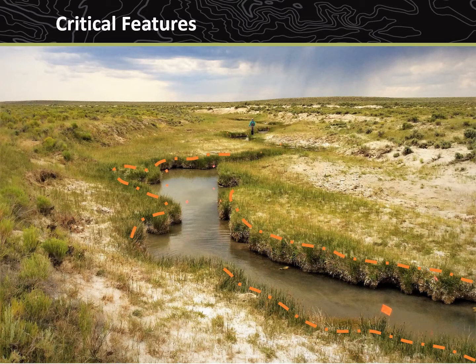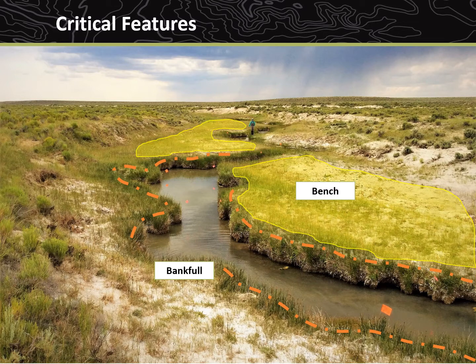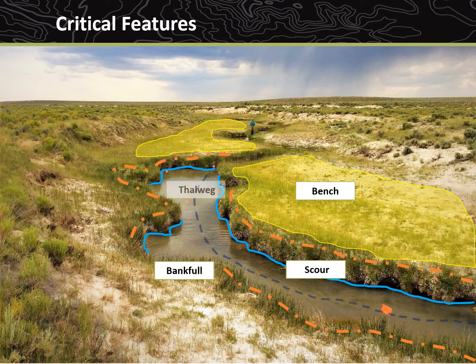Within each sample reach, there are several critical features that must be clearly identified before the sampling process begins. These critical features are: bankfull, the elevation at which the stream just starts to overtop its banks; bench, the flat depositional area at or above bankfull; scour, which defines the active channel; thalweg, the deepest place in the channel with the most flow; and side channels, which are any additional channels besides the main channel.